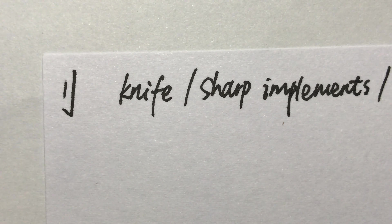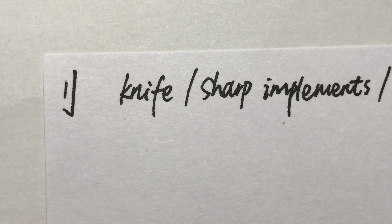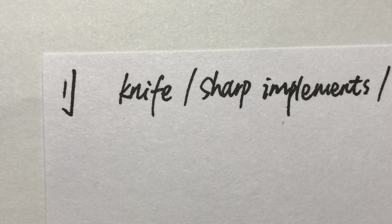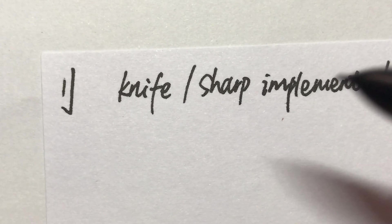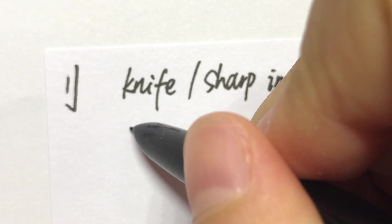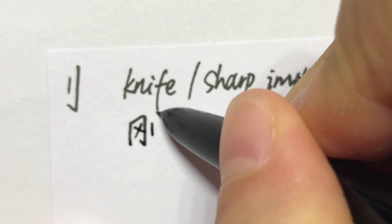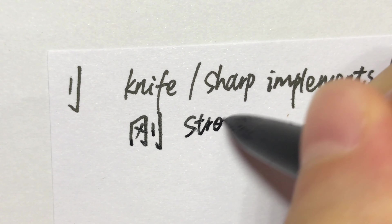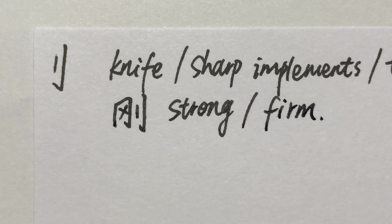Let's take some examples. 刚 (gāng) means strong or firm. For example: 这种内心的刚强，着实让人惊叹。 This kind of strong heart is really amazing.